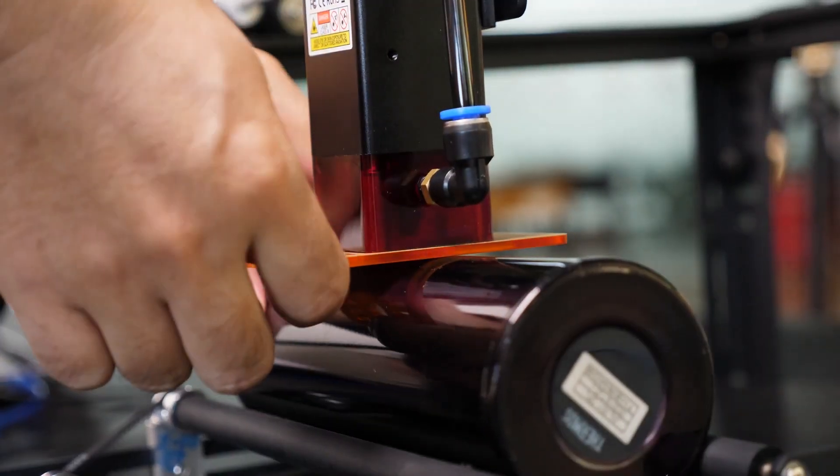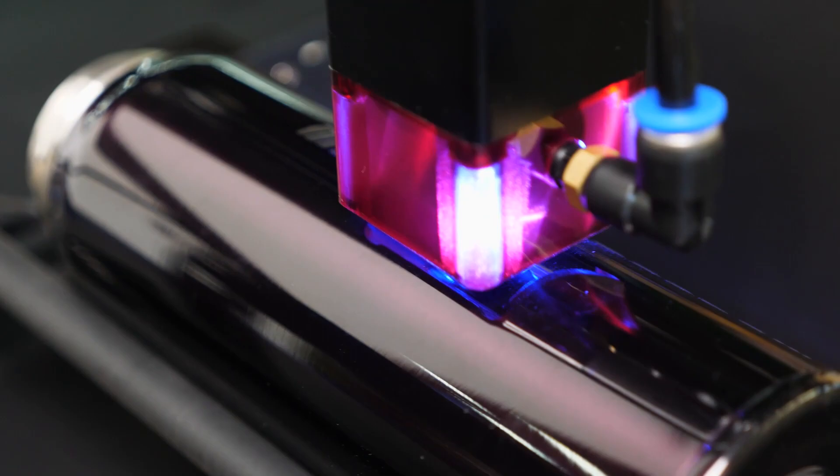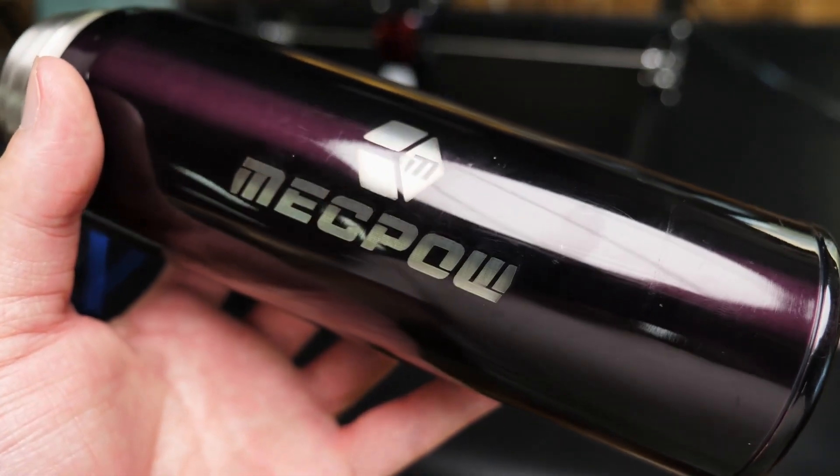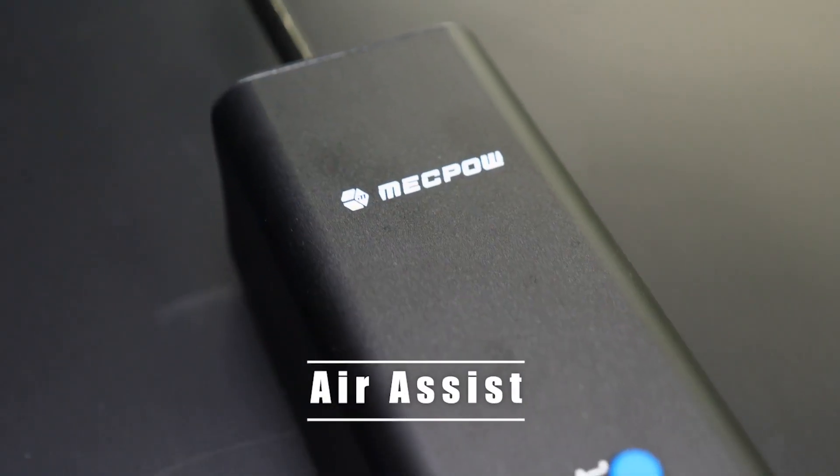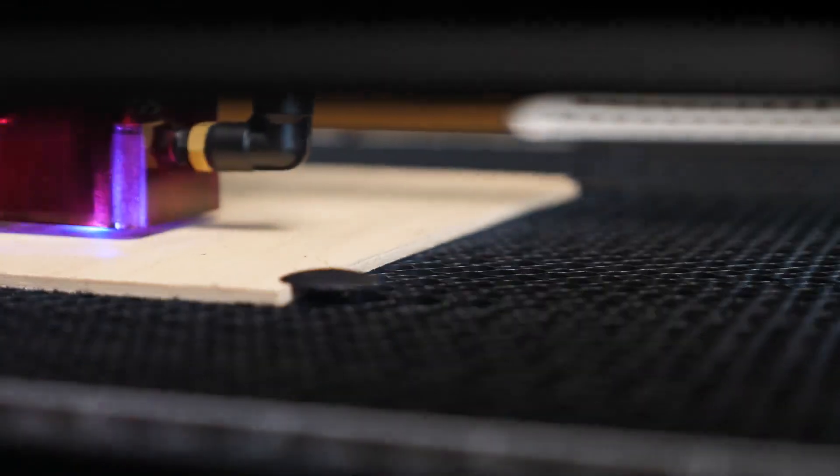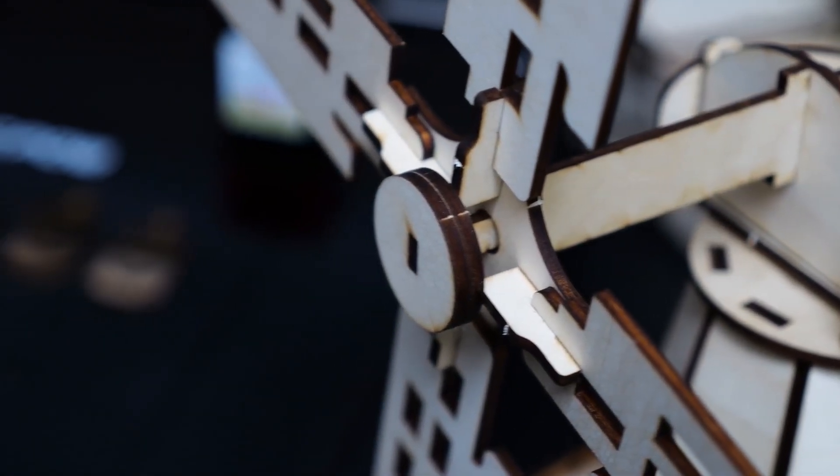Adjust the laser focus the same way you would on a flat material. The results are quite impressive, as it allows for even engraving on cylindrical projects. Another accessory is the air assist, which blows away smoke and debris while cutting or engraving, ensuring a clean surface.